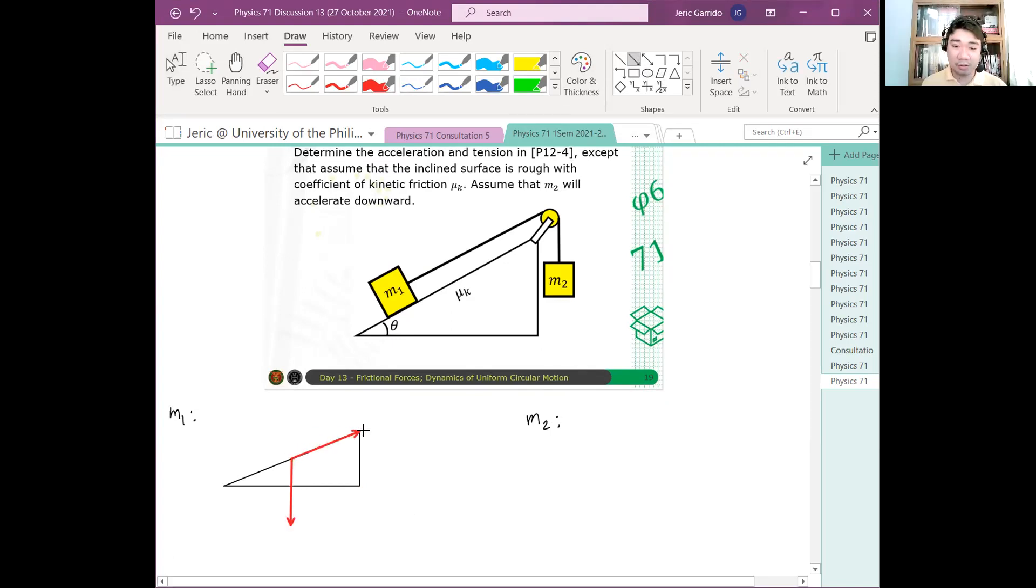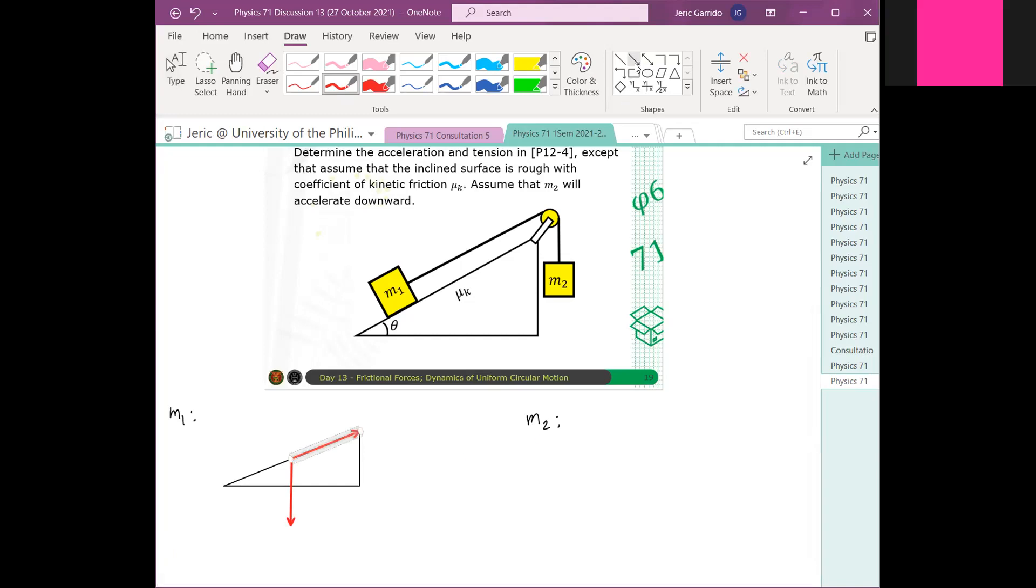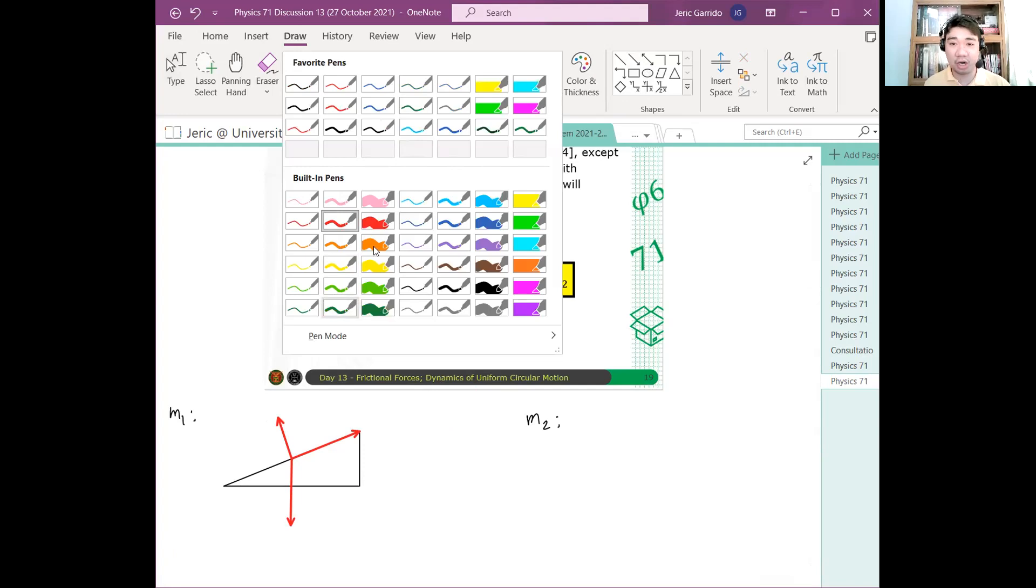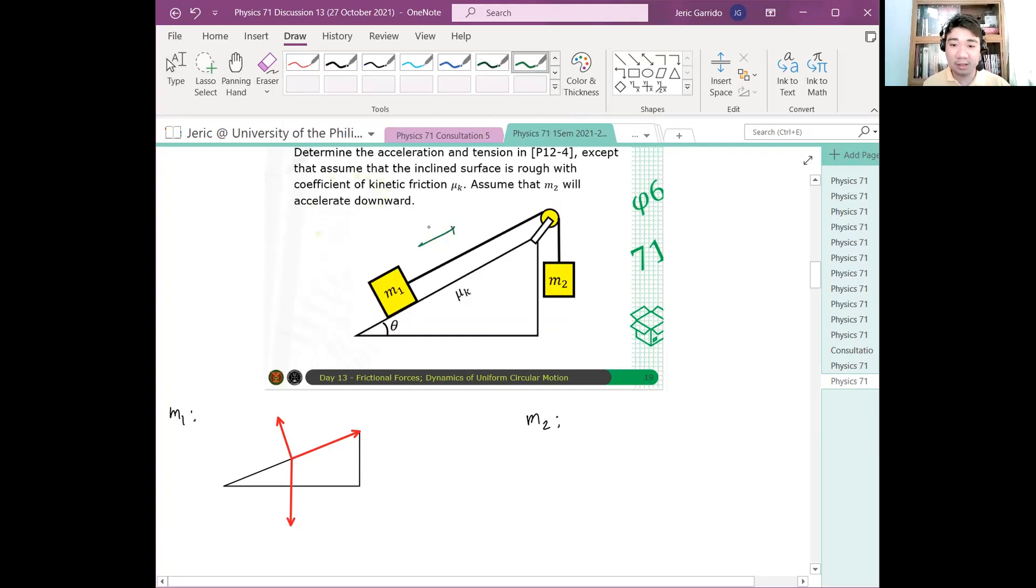Now, ano pa? Ano pa yung mga forces na nag-a-act? Tension. Of course, you have tension, which is parallel to the surface. Yes, and then, ano pa? Normal force. Yeah, normal force. Normal force, which is acting perpendicular to the surface. Ano pa? Note here na nagbigay tayo ng assumption na yung M2 ang babagsak. From the, if you're, for those who haven't watched this problem, please watch it first kasi doon ko sin-act up talaga yung paano nangyayari.